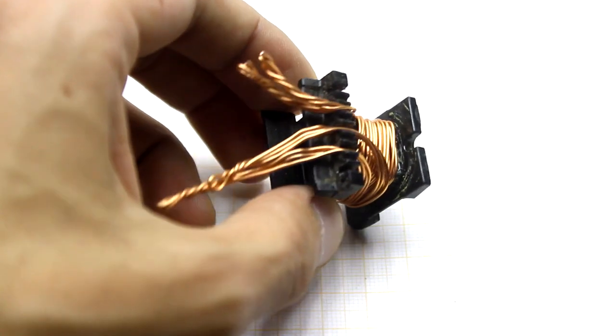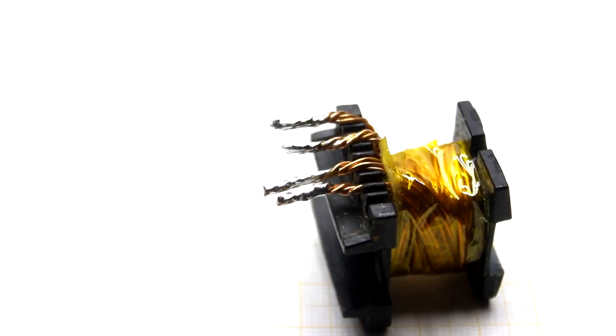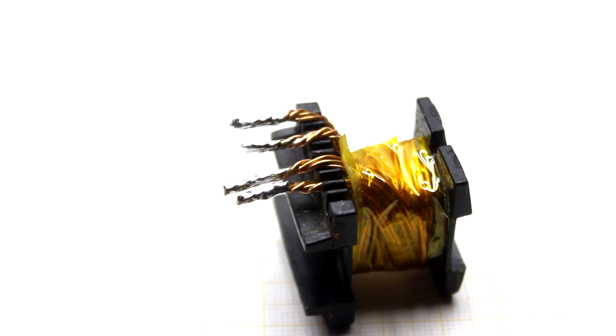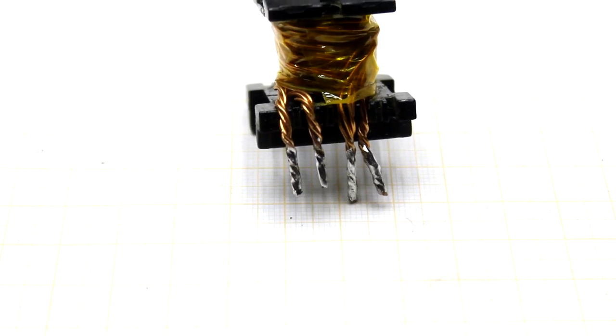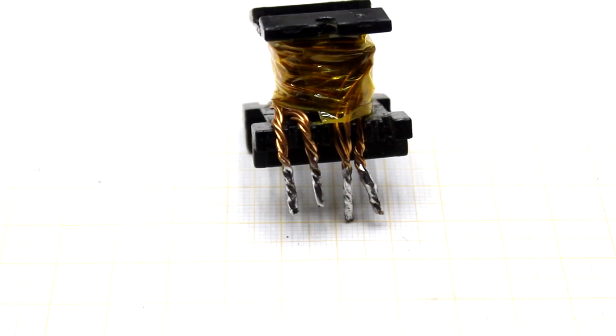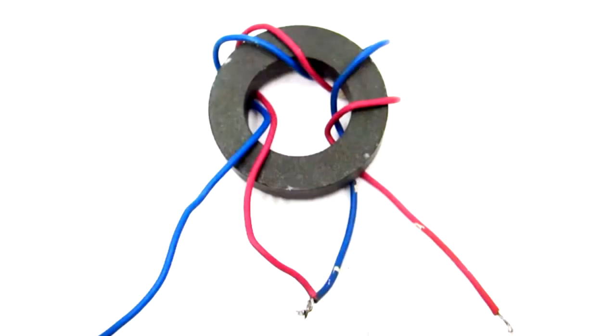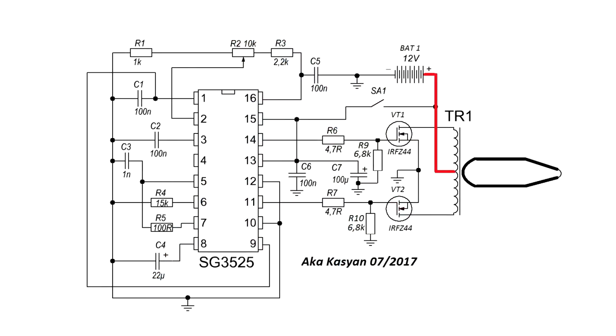That is, you can take, for example, 0.5 mm wire and assemble a bus of 8 and obtain the indicated 4 mm. Both shoulders are wound with the same wire and contain the same number of turns. The beginning of one bus connects to the end of the other. This forms the midpoint. To this midpoint is fed plus from the power source.